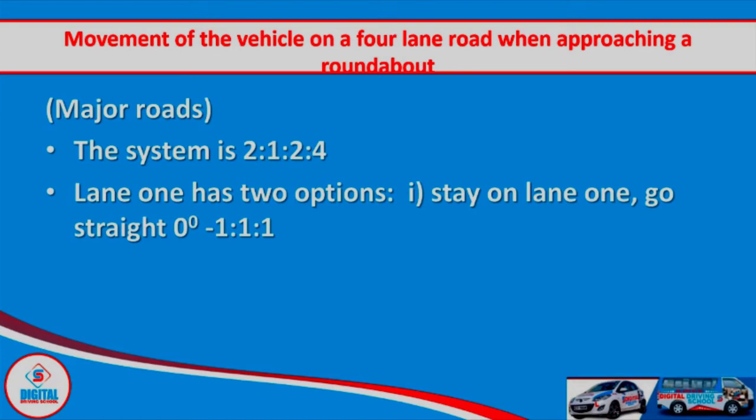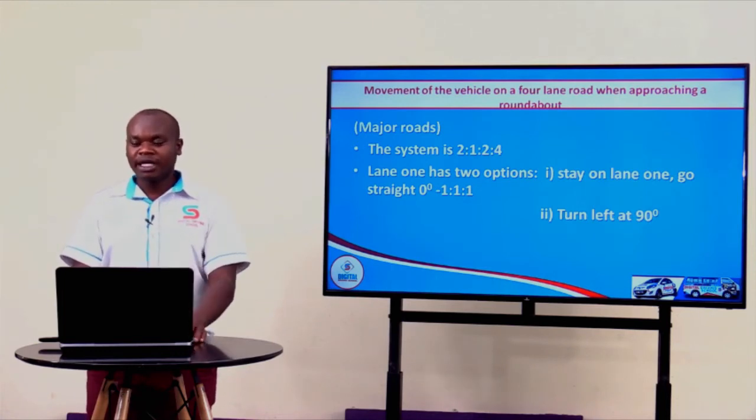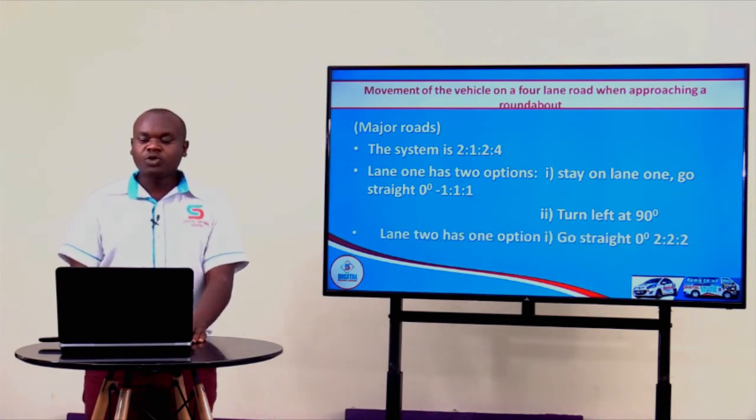Lane number one has two options. The first option: stay on lane one, then go straight — enter lane one at the roundabout and exit at lane one. The second option: turn to your immediate left. If you go in any other direction while in lane number one, you will be making a mistake. Lane number two has only one option: going straight. Enter lane two at the roundabout, maintain that lane, and exit at lane two.